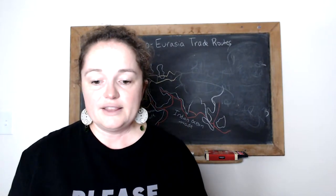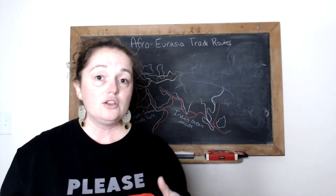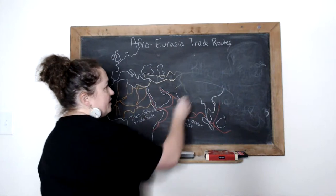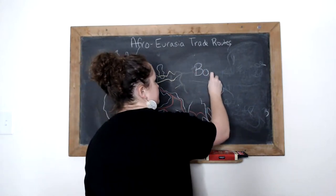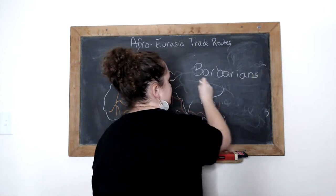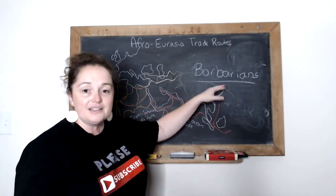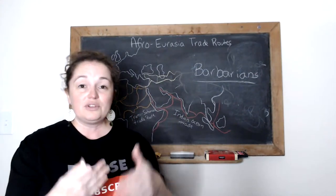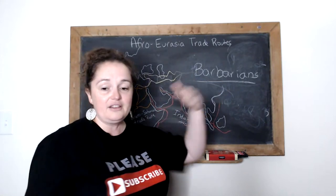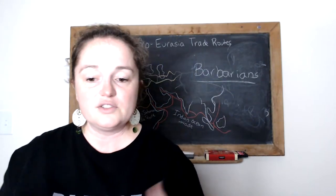Put down that the elite Chinese looked at outsiders as barbarians and didn't want to associate with them. This is interesting because later in history you'll hear Europeans thinking the Chinese are barbarians — but at this point, it's the Chinese thinking that about foreigners.